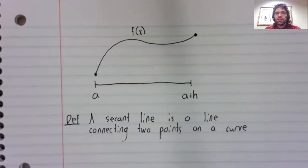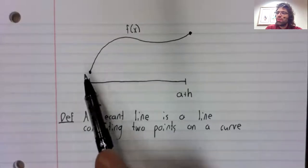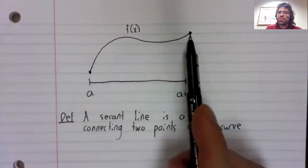A secant line is a line connecting two points on a curve. And for our purposes, those are going to be the first and last points.